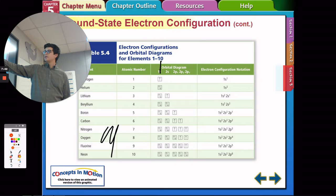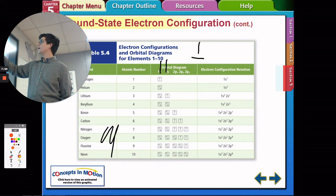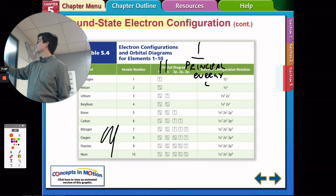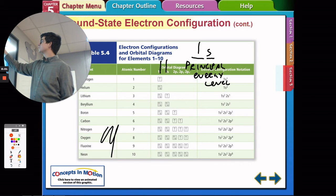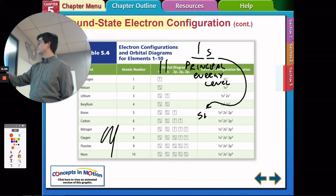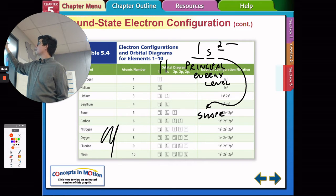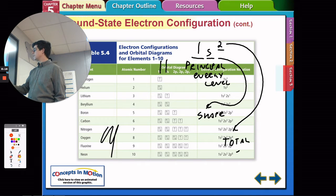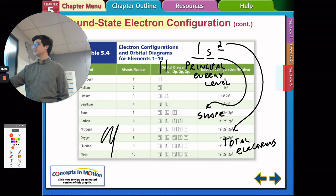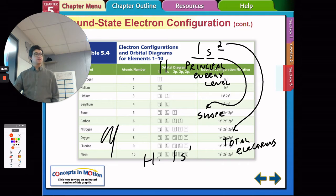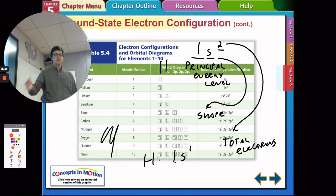Hydrogen has one electron — one arrow. Helium has two — two arrows. These are the 1s orbitals; when 1s is full we go to 2s. The number — like the '1' in 1s — represents the principal energy level. The letter represents the shape of the orbital. The superscript represents how many total electrons are in that energy level. So hydrogen is 1s¹: one electron in the first principal energy level with a spherical s-shape orbital.